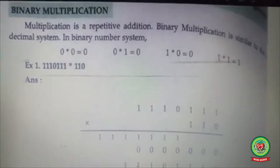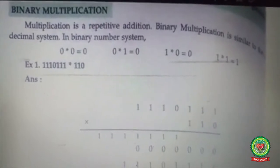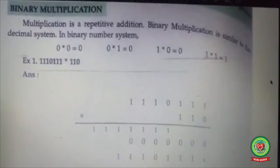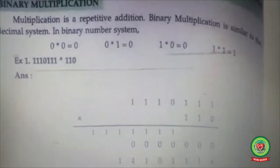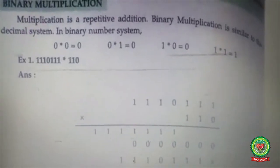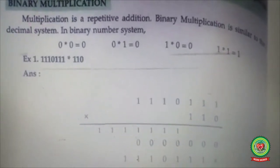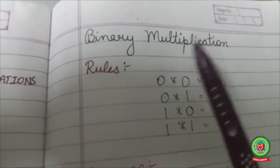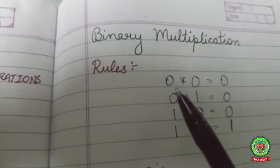Our next topic is binary multiplication. Open your book at page number 36. Multiplication is a repetitive addition. Binary multiplication is similar to that of the decimal system. The rules for binary multiplication are: anything multiplied by 0 is 0.